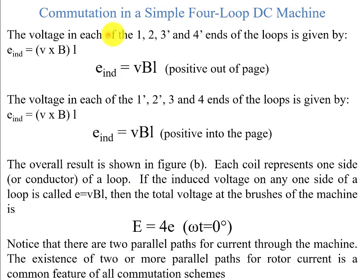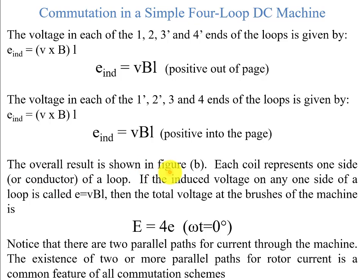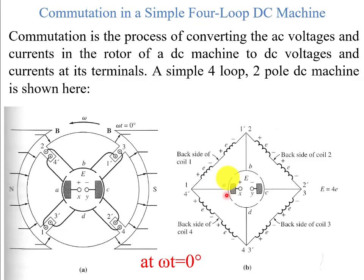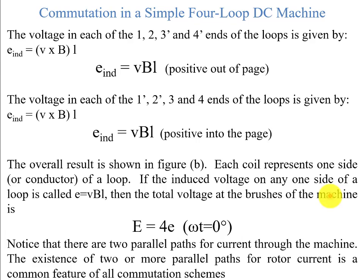The voltage induced in the loops under the north pole — ends 1, 2, 3-prime, and 4-prime — is given by V = (v × B) · L, so V_induced = VBL, positive out of the page. Under the south pole — ends 1-prime, 2-prime, 3, and 4 — the same value is induced but positive into the page. The overall result shown in figure B is that each wire has an induced voltage, and the total voltage E equals 4E at omega-t = 0.